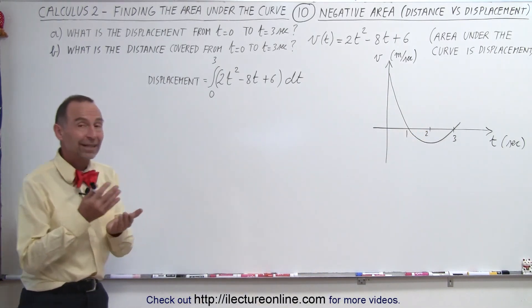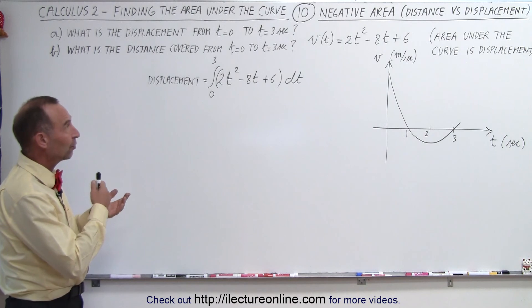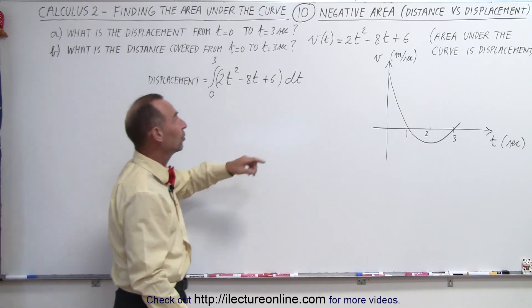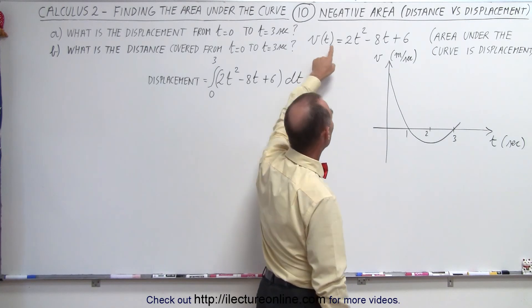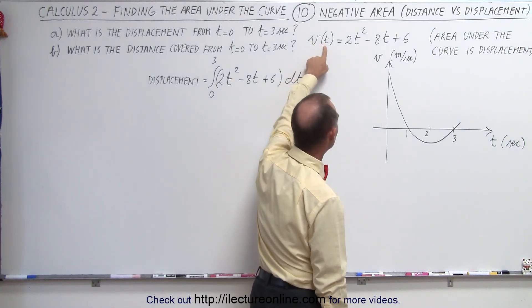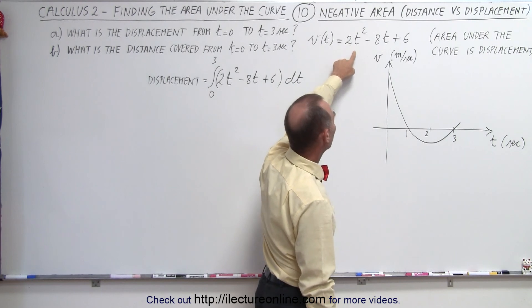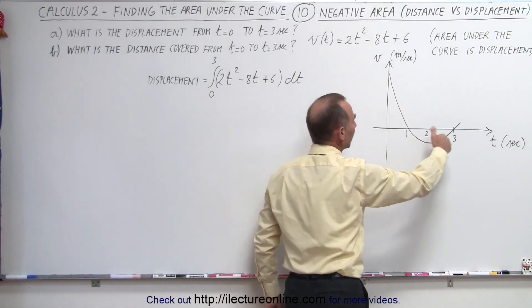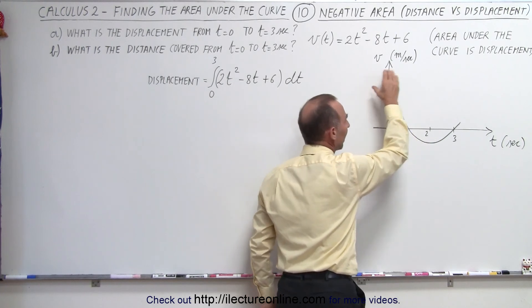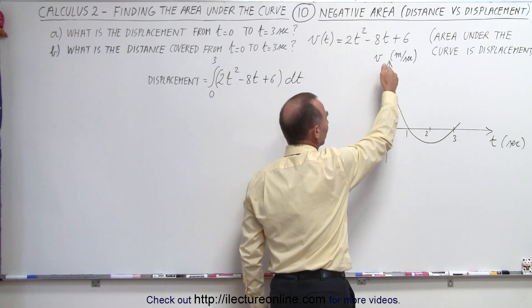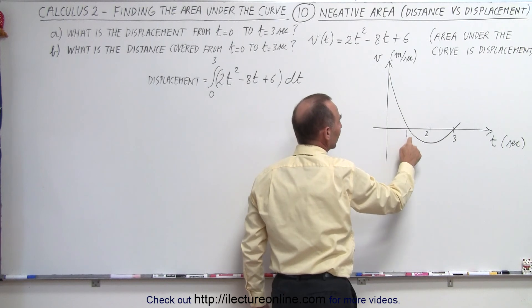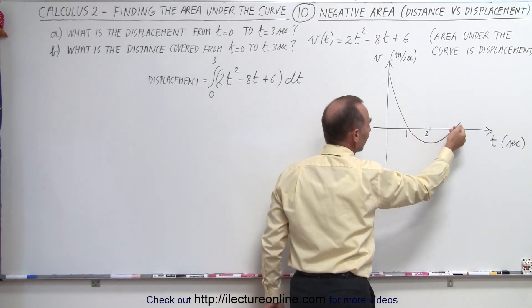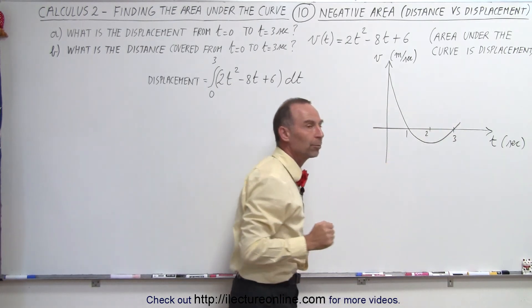What we're going to do here is calculate the displacement and the distance covered by an object subject to this equation right here. We have an equation that tells you the velocity of the object as a function of time: v(t) = 2t² - 8t + 6. Here we have a graph representing velocity as a function of time. You can see that the velocity is positive until 1 second has elapsed, then negative until 3 seconds, and then positive again.